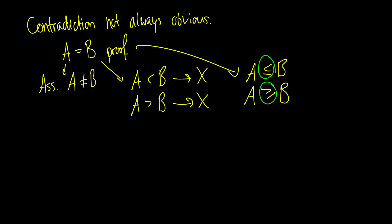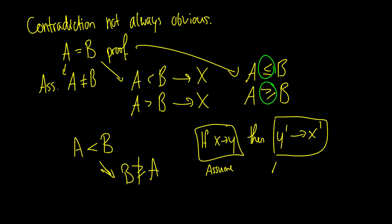What if you want to have an A less than B proof? It's fairly straightforward since you just show that B cannot be greater than or equal to A. Similarly, the other way is also fine. What if you have an if x then y, then not y implies not x? What if you have y prime implies x prime? You could assume this. So you assume that x implies y is true, but then you assume not this statement for a contradiction.